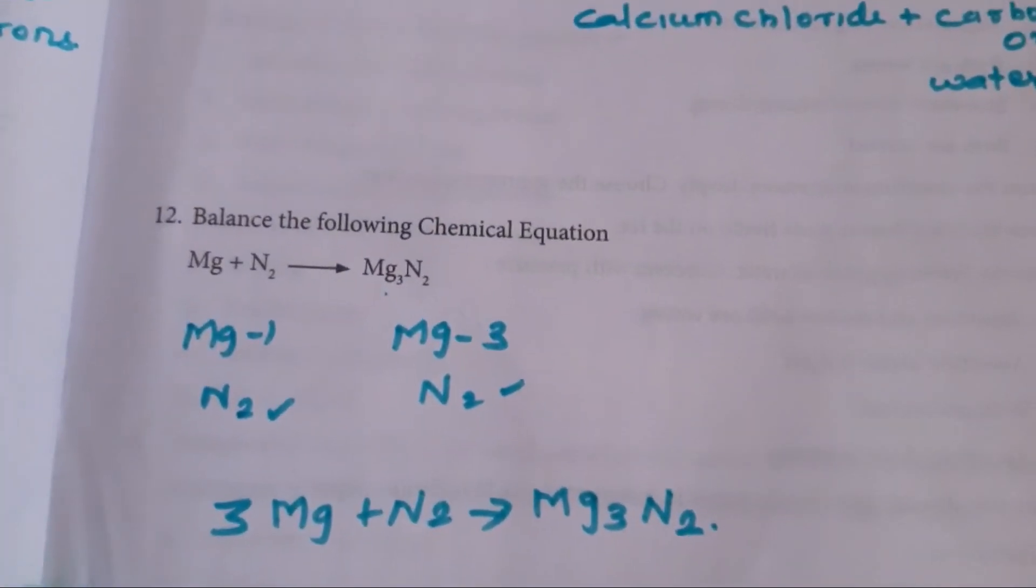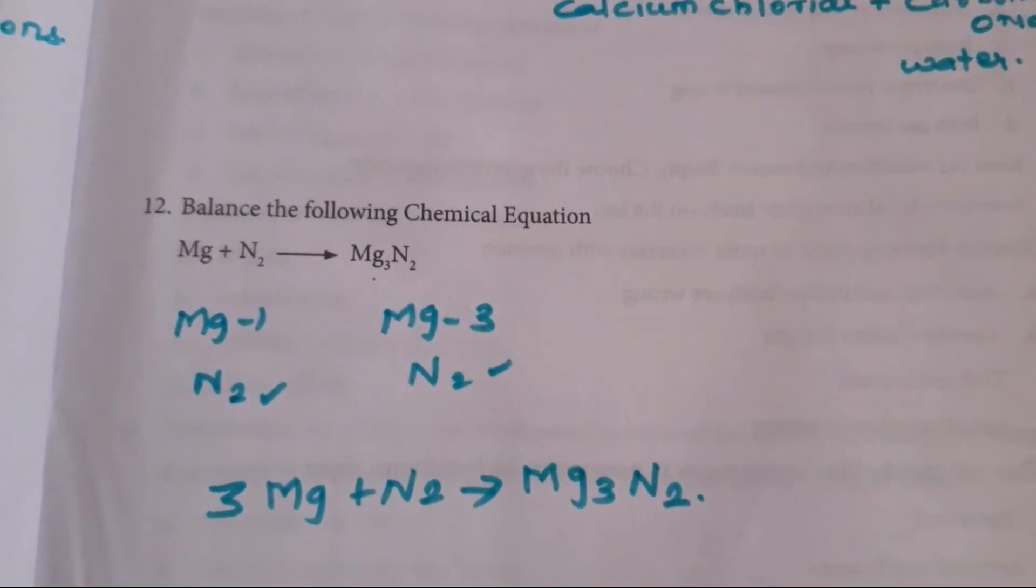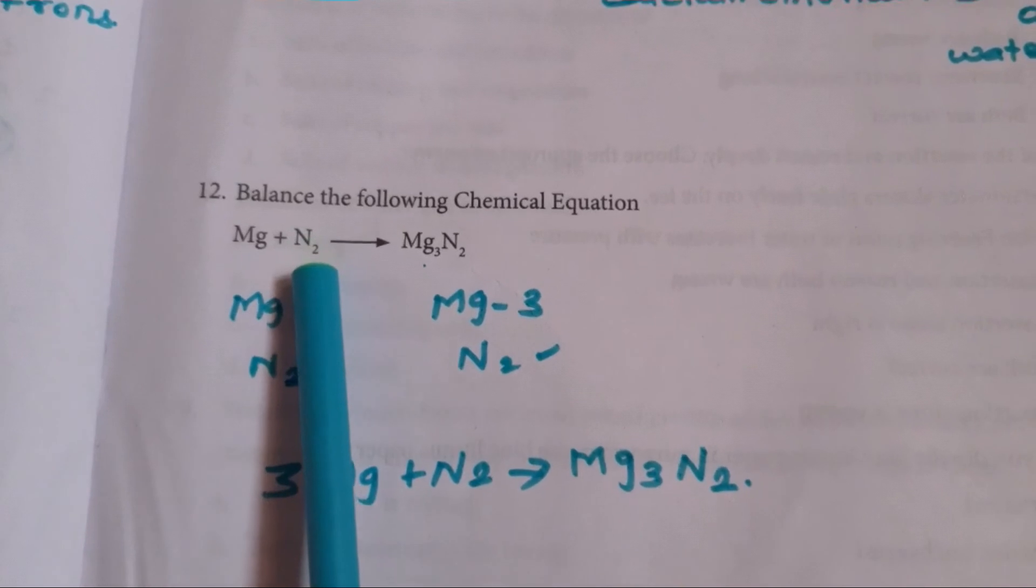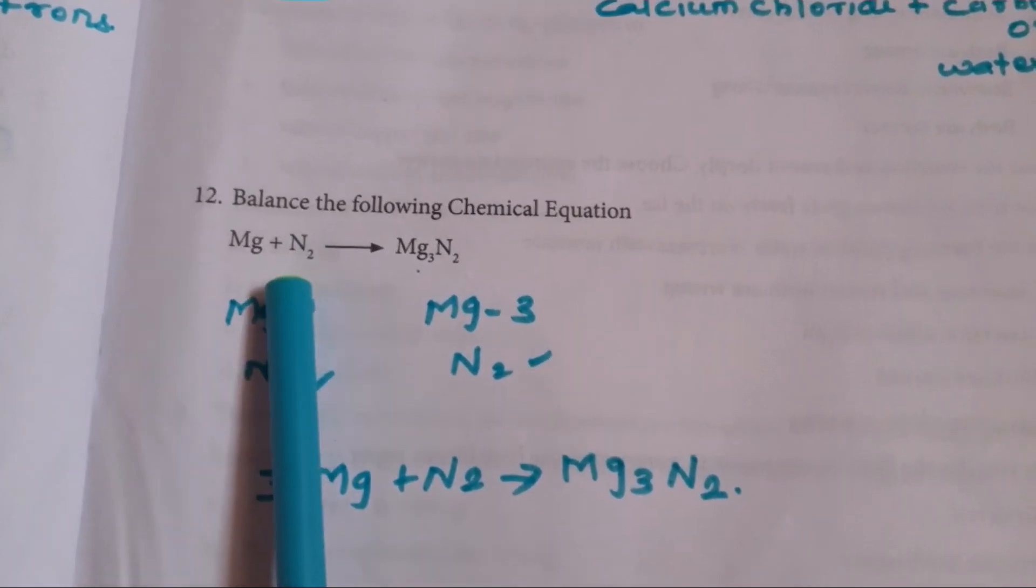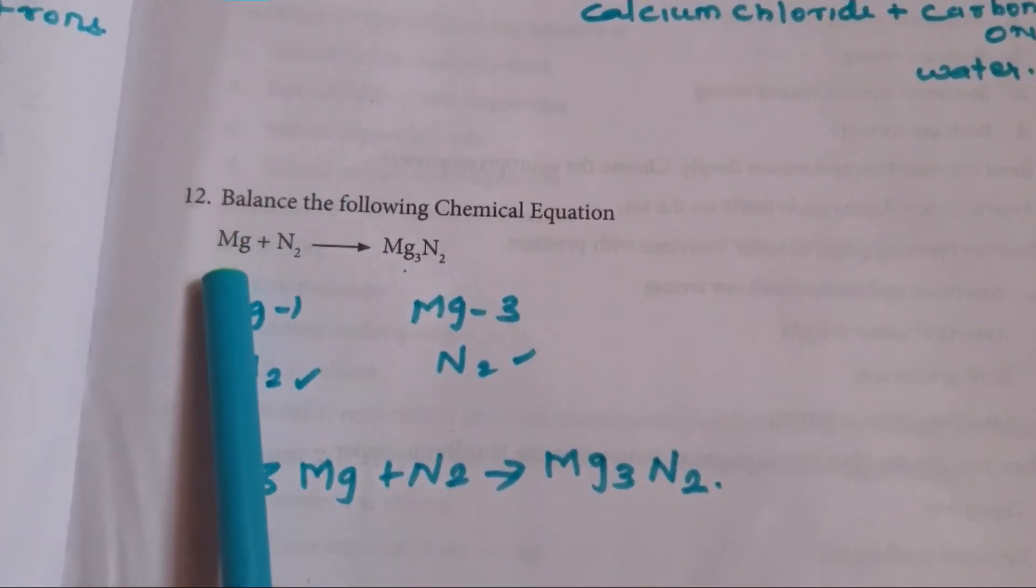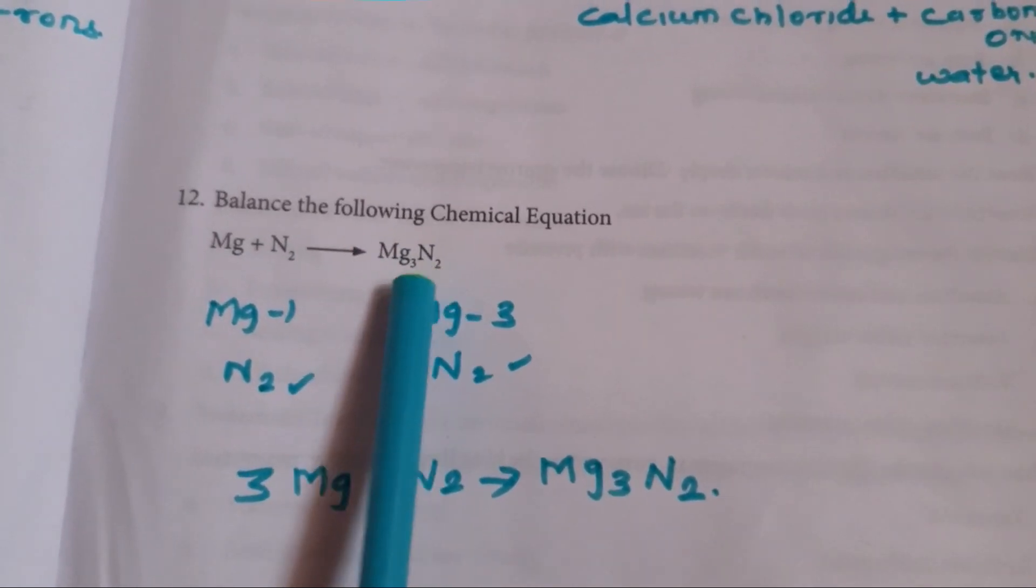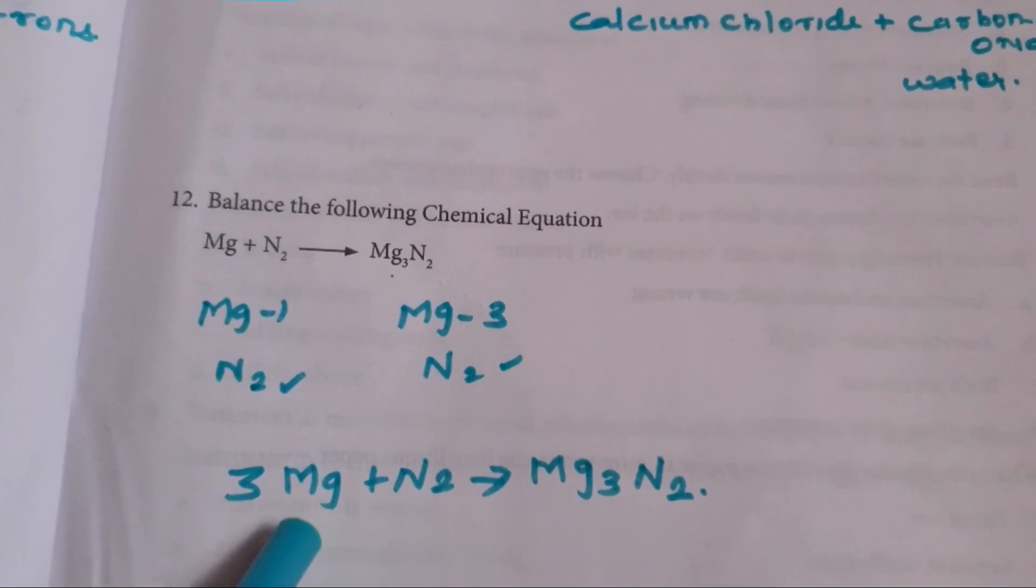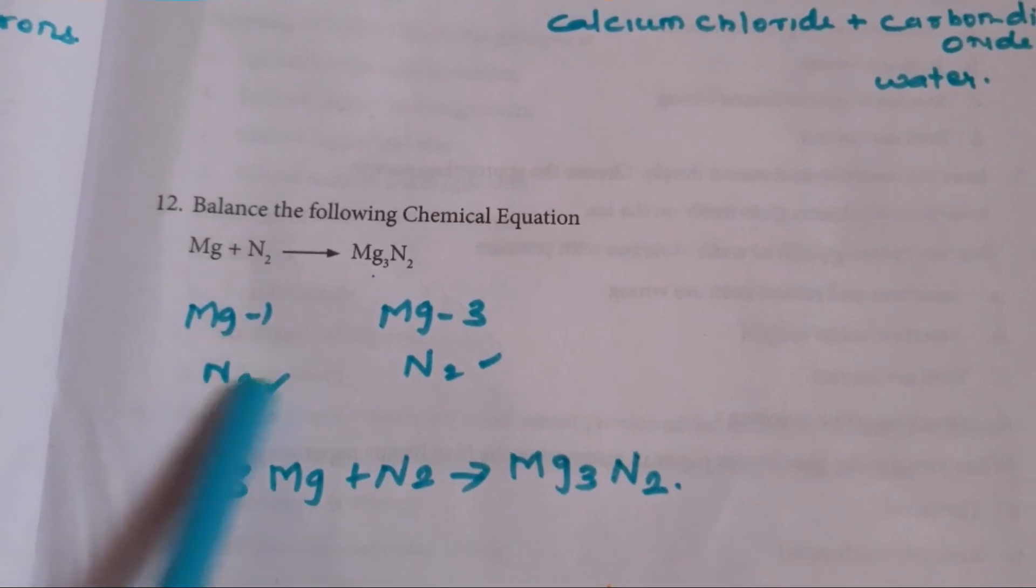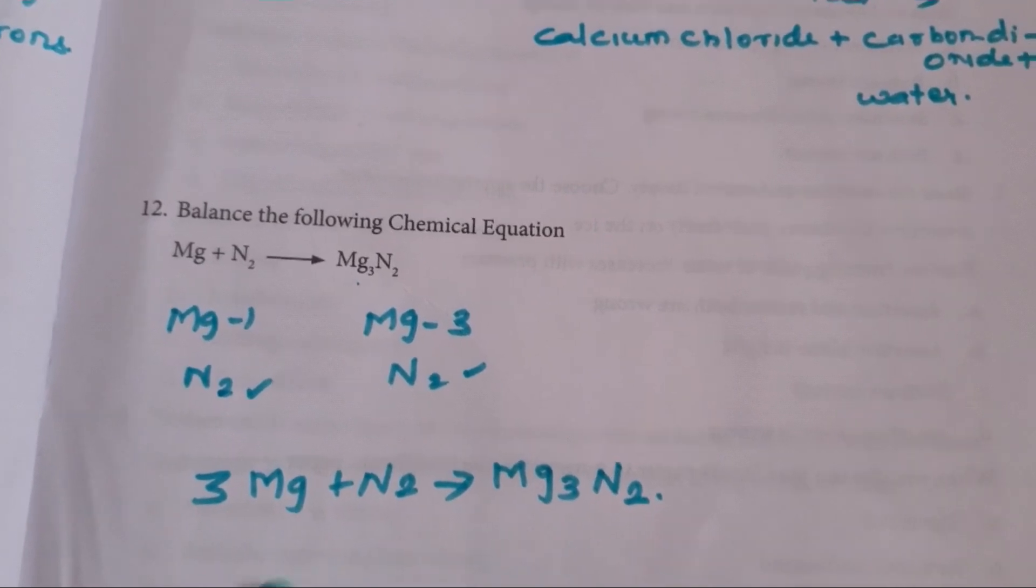Then balance the following chemical equation. Mg plus N2 gives Mg3N2. So balancing the equation is very important one for chemistry. And here, consider N is nothing but N2. And here also N2. So the nitrogen value is balanced. But consider magnesium. Mg, it is 1 in reactant side and 3 in product side. So for that, we should multiply it with a 3. So 3Mg plus N2 gives Mg3N2. So the equation will be 3Mg plus N2 gives Mg3N2. That's all. Thank you.